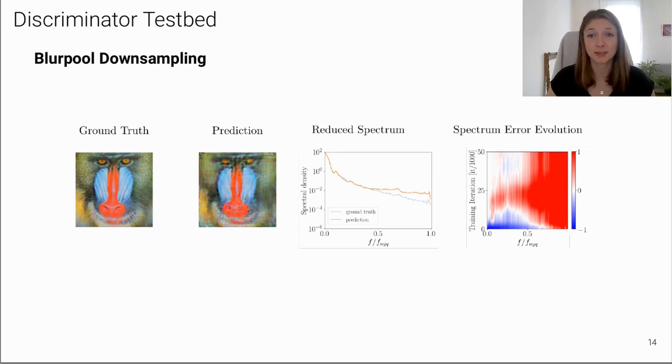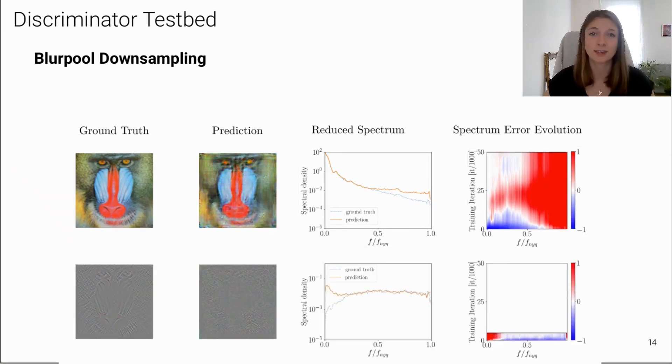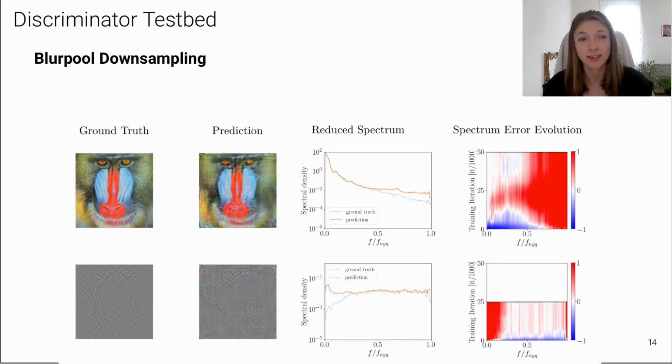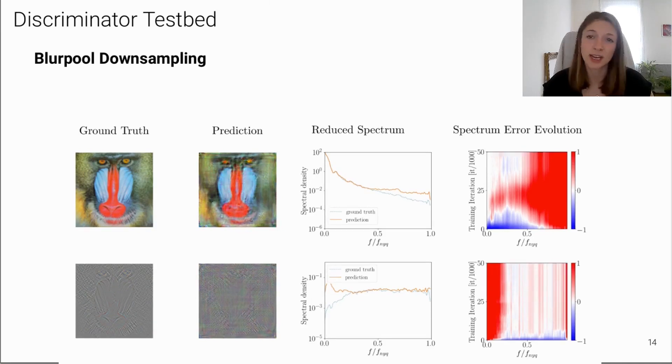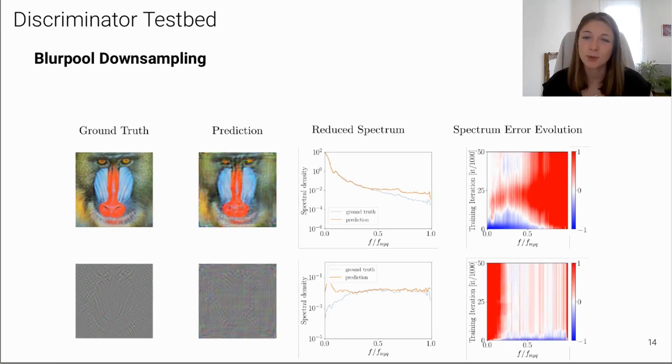However, if we look at the high-pass filtered image, now results look quite different. So, now the magnitude of the high frequencies is learned correctly, but then the low frequencies are off. This shows that the discriminator is not biased towards high frequencies per se, but rather struggles to detect frequencies with low magnitudes.